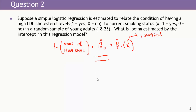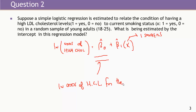In generic linear equations, the intercept estimates the value on the left-hand side when all x's are 0. We only have one x here, and if it's 0, it defines the group of non-smokers. So this intercept estimates the log odds of high cholesterol level for non-smokers — it's the log odds for non-smokers in this sample, which is an estimate for the log odds in the population from which this sample was taken.